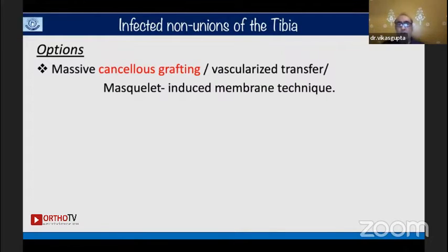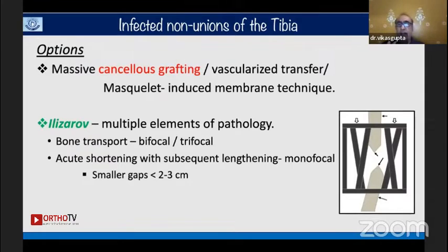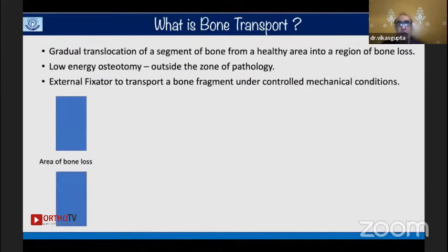vascularized fibular transfer, or the Masquelet induced membrane technique, which non-Ilizarov surgeons often use. But those trained in Ilizarov can vouch that it corrects multiple elements of pathology using bone transport: bifocal for activity at two levels, trifocal for large gaps, and monofocal lengthening for smaller gaps under two to three centimeters. Amputation is no longer an option in the present era.